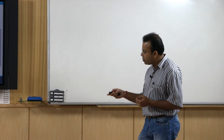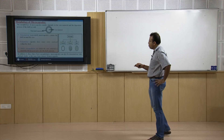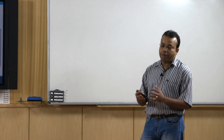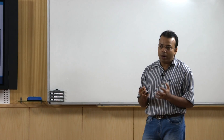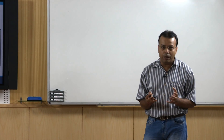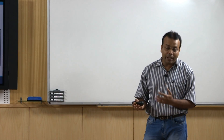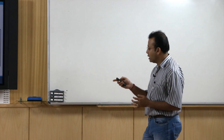In addition to these three basic morphologies, microcapsules can also be mononuclear with multiple shells, or they may form clusters of microcapsules. So depending upon our requirement and applications, we can make different types of microencapsulations.